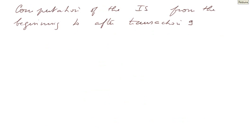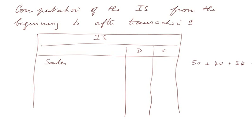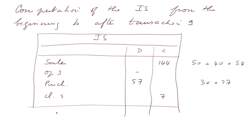Let's compute the income statement formally from the beginning through transaction 9. Sales: 50 plus 40 plus 54 equals 144,000. Opening stocks: nothing. Purchases: 30 plus 27 equals 57. Closing stocks using LIFO: 7. That gives a gross margin of 94. Since we haven't recorded any other charge yet, the net result is also 94.